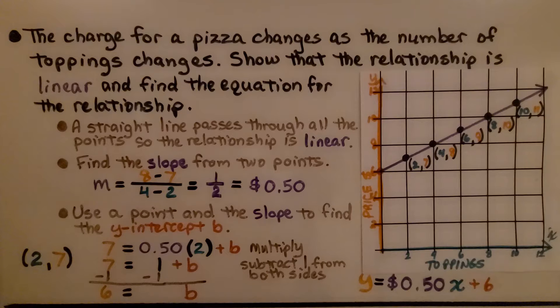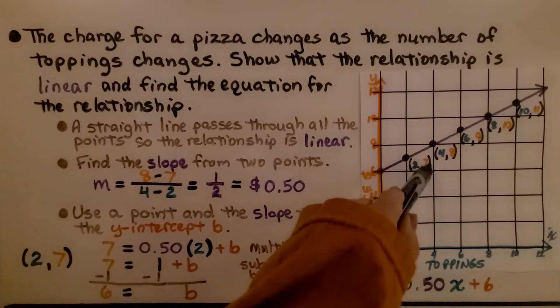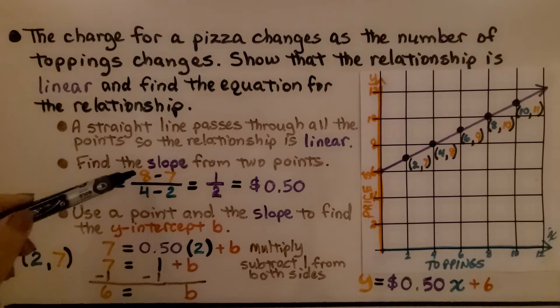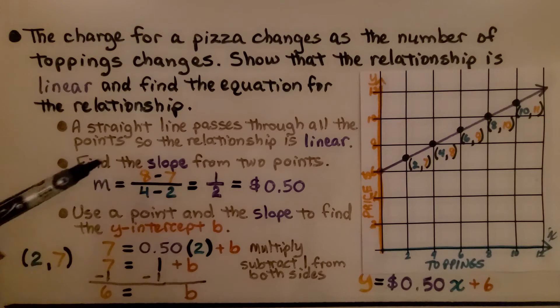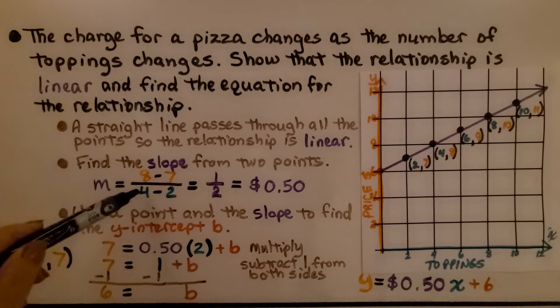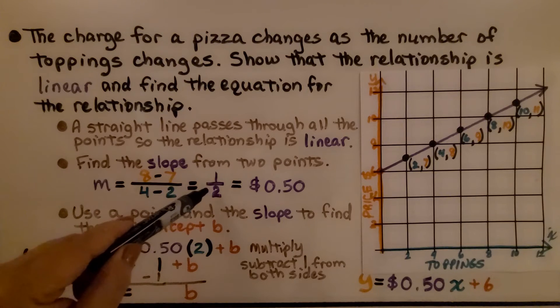Now we find the slope from two points. I chose this point and this point. We have 2,7 and 4,8. We do 8-7 for the y-sub-2 minus y-sub-1 in the slope formula and 4-2 for the x-sub-2 minus x-sub-1. We get one half.